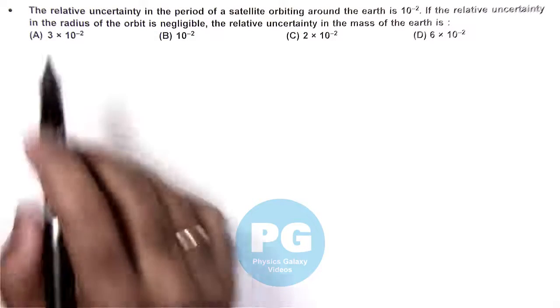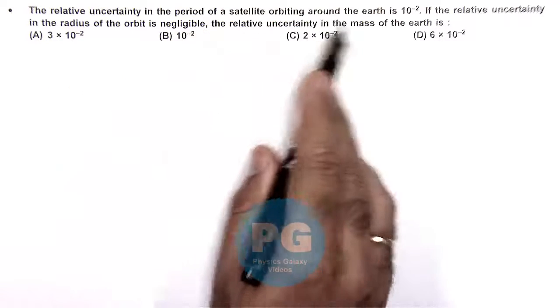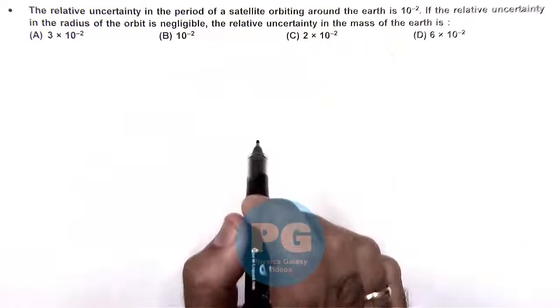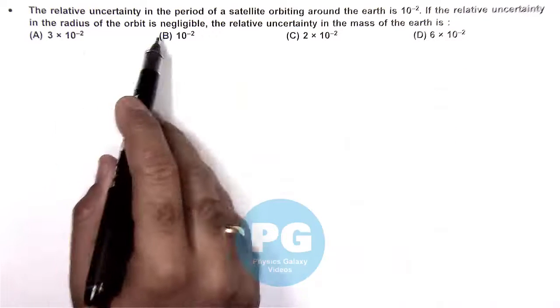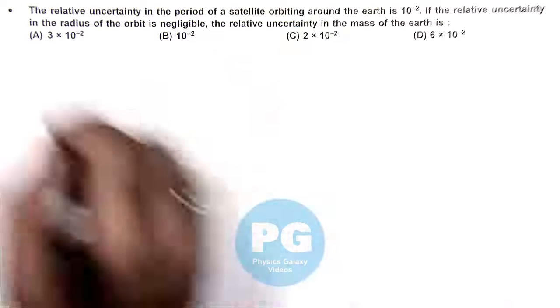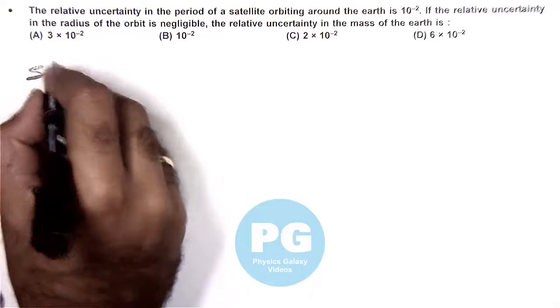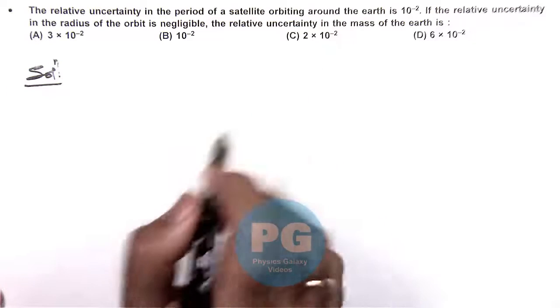In this question it says that the relative uncertainty in the period of a satellite orbiting around the earth is 10 to the power minus 2. And if the relative uncertainty in the radius of orbit is negligible, then the relative uncertainty in the mass of earth is...